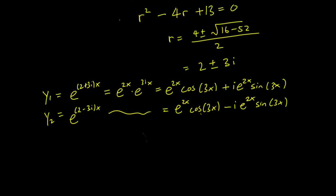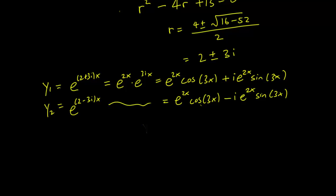So again, these are perfectly valid solutions but we always want real solutions when we have a real differential equation. So let's instead rewrite this as y₁ equals e^(2x) cosine 3x, y₂ as e^(2x) sine 3x.